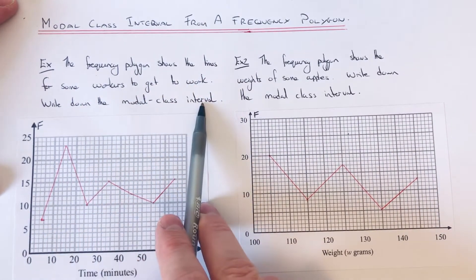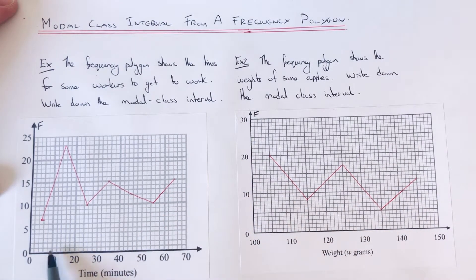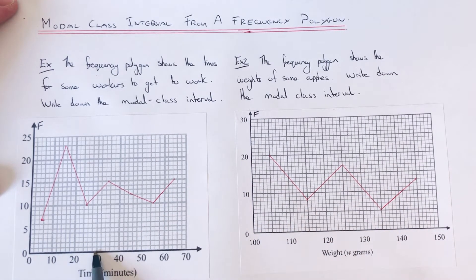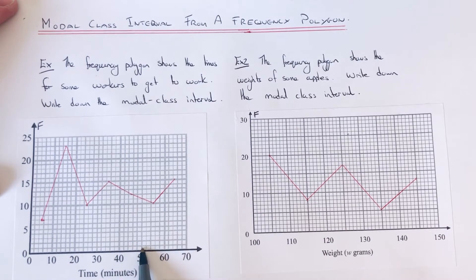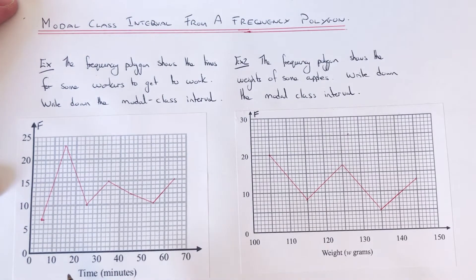Our groups are 0 to 10, 10 to 20, 20 to 30, 30 to 40, 40 to 50, 50 to 60, and 60 to 70. So we just need to look for the highest point on our graph.